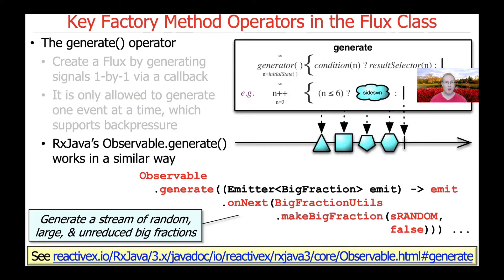There's also a generate operator defined in RxJava's Observable class, and it works in a very similar way, although it doesn't take a synchronous sink. Instead, it takes an emitter, and you can see in this particular example that this generate method takes a lambda expression that will continue to emit random big fractions using the onNext method that's part of the emitter interface. Similar concept, slightly different type systems.